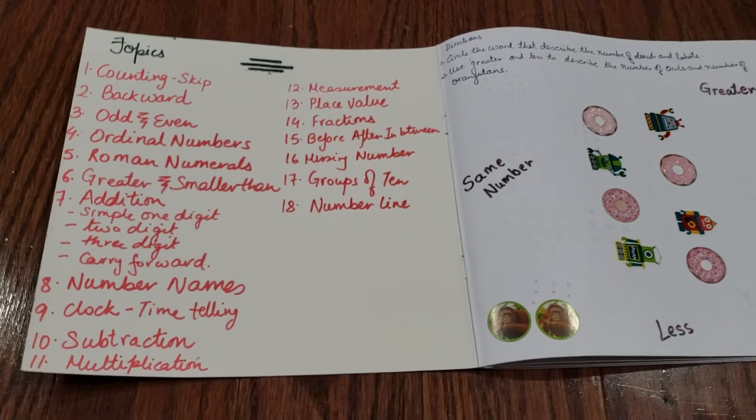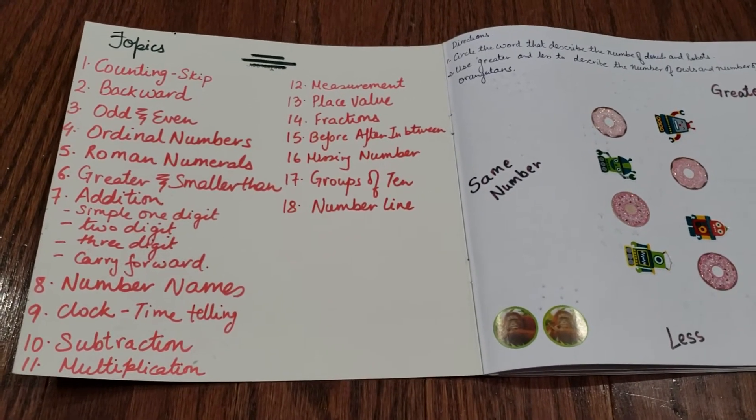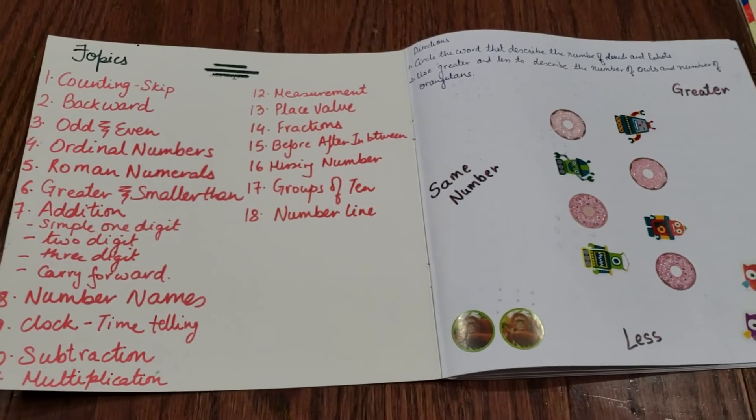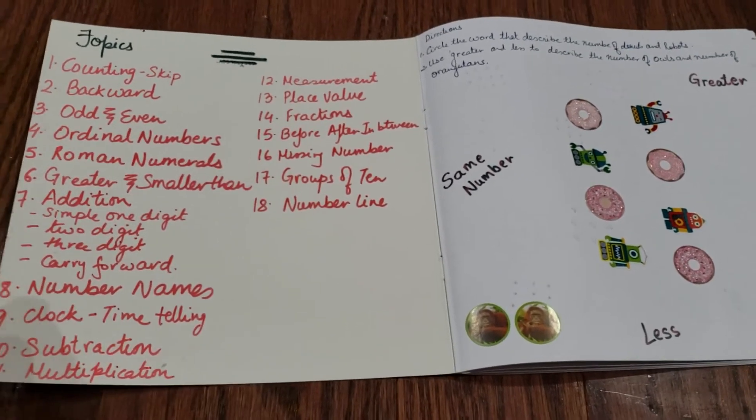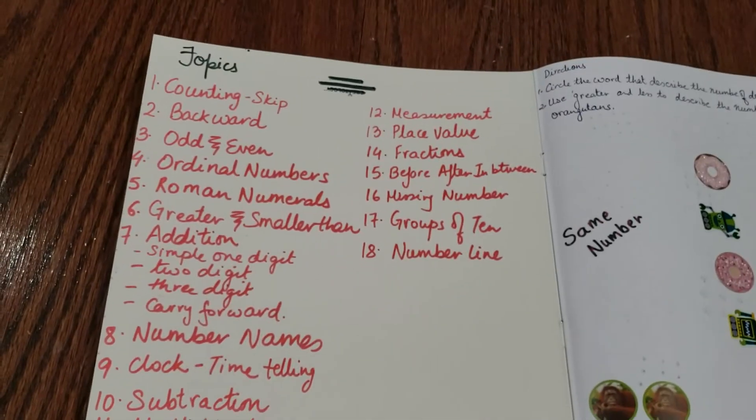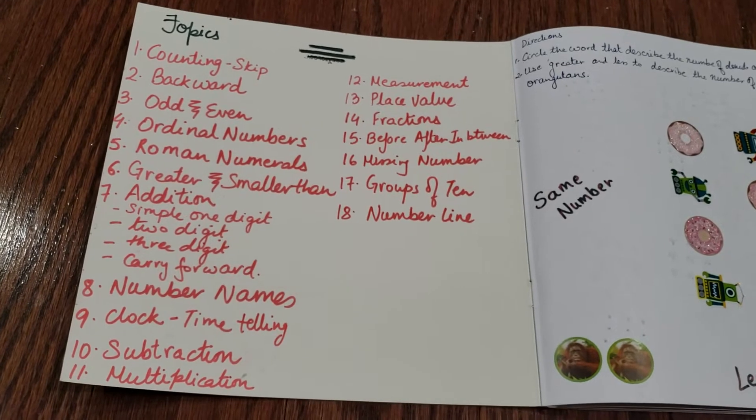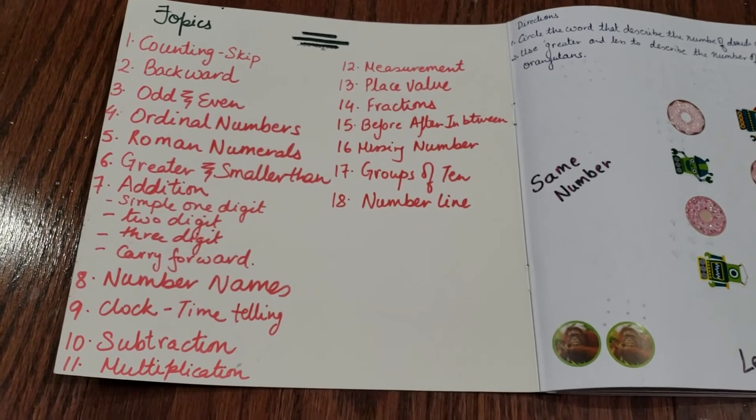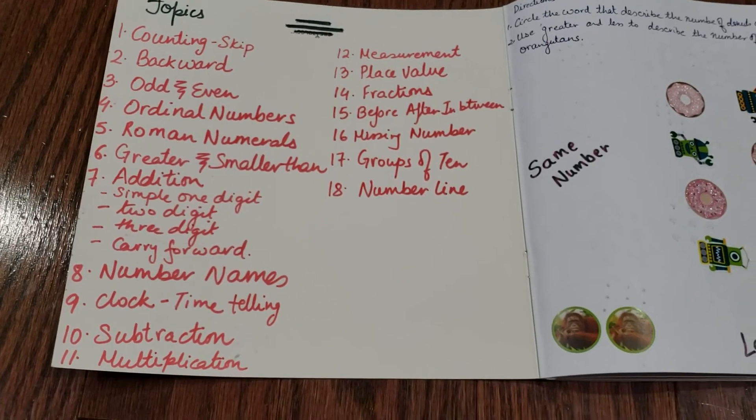We did all these topics last year or this year, and I'm going to make a number of books covering six to seven topics in each book. The topics here are counting, skip, backward, odd and even, ordinal numbers, before-in-and-after, missing numbers, group of ten, number line, and then clock, subtraction, and multiplication.